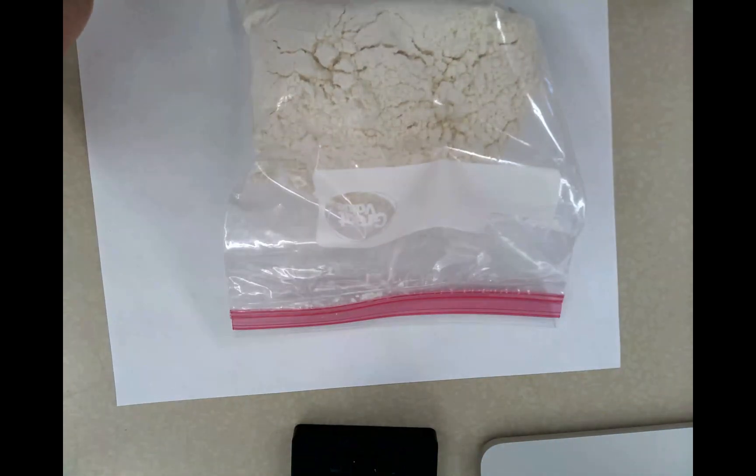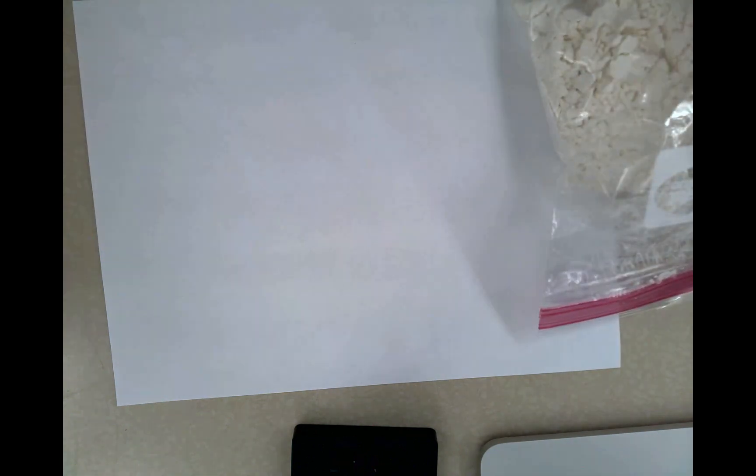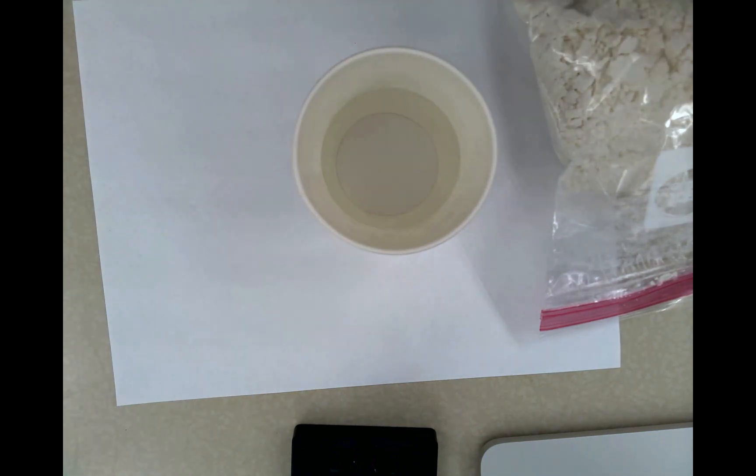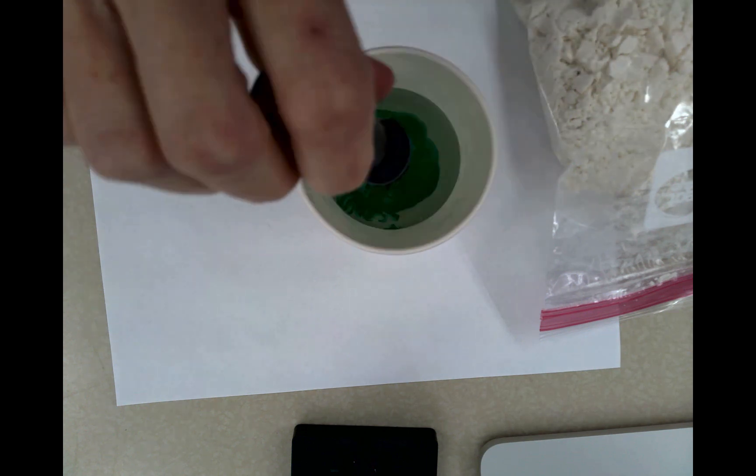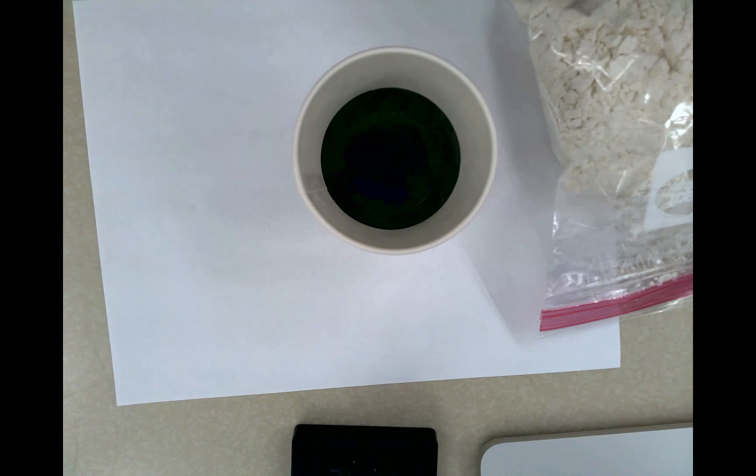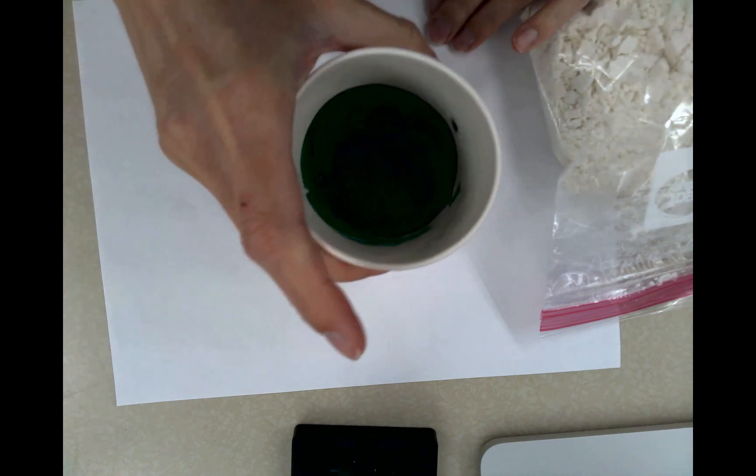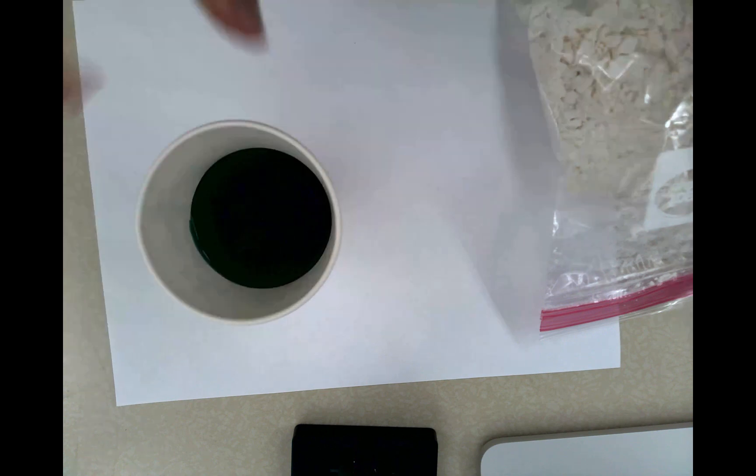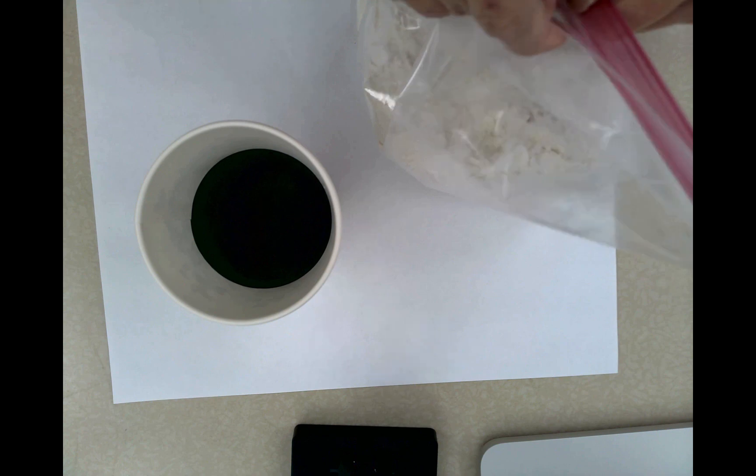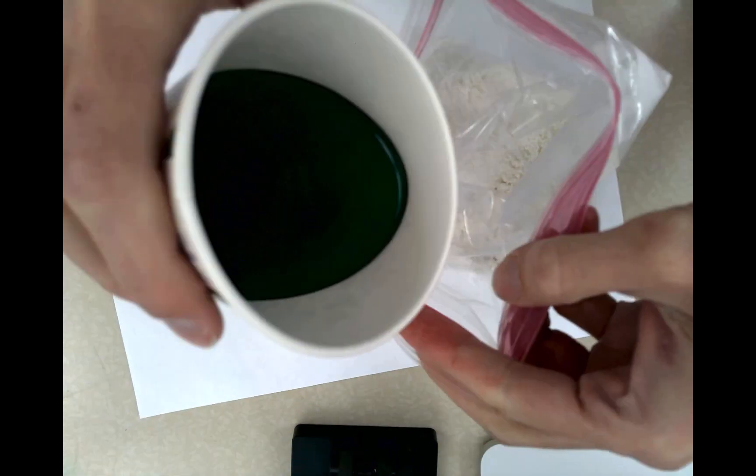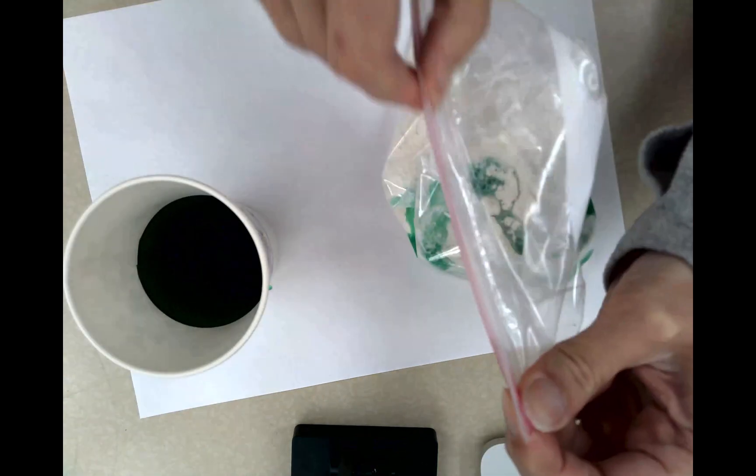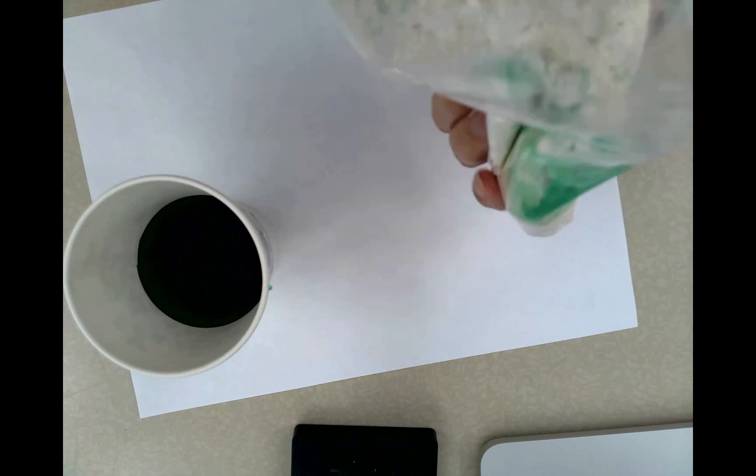And then we're going to take a glass of water. And you can pick your color of food coloring. We're going to add the food coloring to the water so that we have a more even color. Now we want to slowly add the water to the flour. It doesn't take a lot, but a little at a time. And then we're going to mix it around. And that will continue until you get the consistency of play-doh.